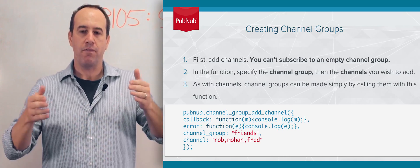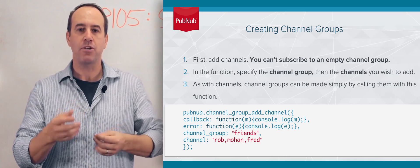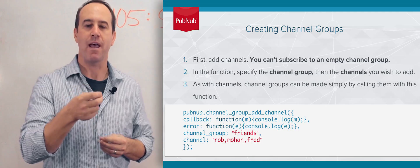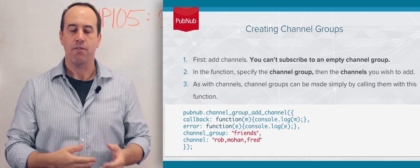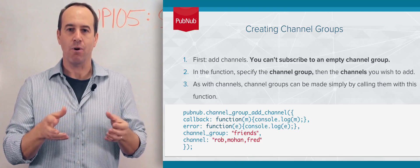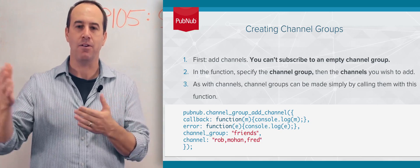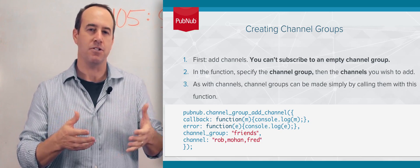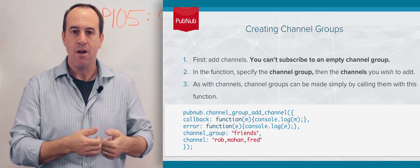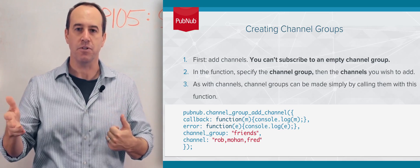So in your application, you want to make sure that when you subscribe to a Channel Group, it does already have at least one channel in it. From that point forward, though, that Channel Group is just like a channel. Anybody can use that Channel Group, and it's up to your application to decide whether that Channel Group is unique to that user or is available to a number of users.